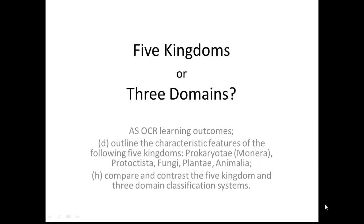Hello, and today we're thinking about ways of classifying living organisms, and in particular about the five kingdoms or the three domain system. We're looking at these two OCR learning outcomes: outline the characteristic features of the five kingdoms — prokaryota, protoctista, fungi, plantae, animalia — and comparing and contrasting the five kingdom and three domain classification systems.